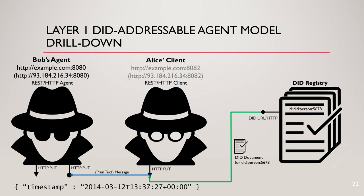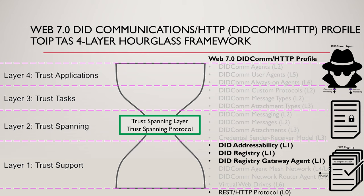Mapping layer one to the TOIPE Hourglass Framework: all we need is addressability — a DID registry. In Web 7.0 we also need a DID registry gateway client and gateway agent, because everything in Web 7.0 runs on the DIDCOM protocol. The role of the DID registry gateway agent is to provide a DIDCOM interface over whatever DID resolution protocol is supported by the registry. REST over HTTP appears in black but not bolded, indicating it was inherited from layer zero.